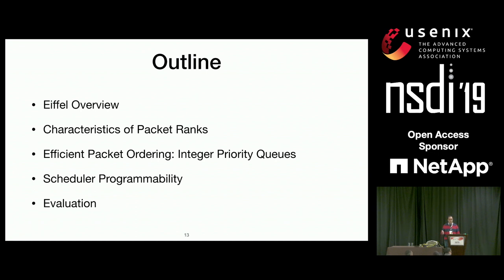I'll first tell you about the scheduler architecture and what parts we focus on in our work on Eiffel. Then, to explain how we arrived at our optimizations, we'll examine the characteristics of packet ranks, which leads us to Eiffel's efficient building block — the integer priority queue. Finally, I'll cover how we use this building block to extend the programmability of software schedulers, along with a brief overview of our evaluation.